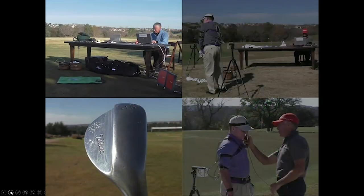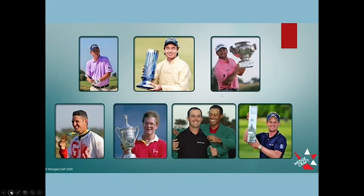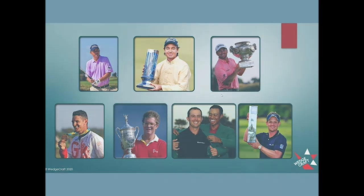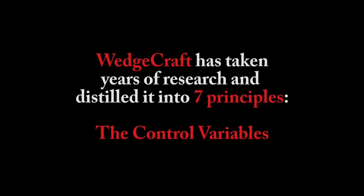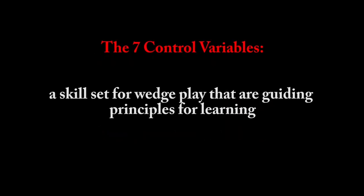This gave us a very comprehensive set of data on the best players in the world — here are examples of some of the major champions and Ryder Cup players. The years of research led us to come up with seven principles known as the control variables, which govern and guide you in playing wedge shots correctly.